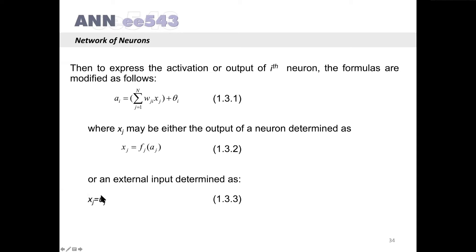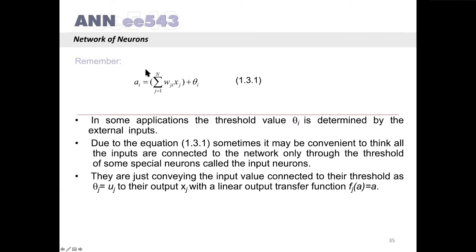Or xj may be an external input, determined as xj equals uj. Instead of a neuron output, we have an external input. Remember that this is the activation of neuron i, given by this formula. In some applications, the threshold value theta-i is determined by the external inputs. Due to the equation given above, sometimes it may be convenient to think that all inputs are connected to the network only through the threshold of some special neurons called the input neurons.